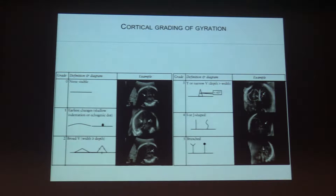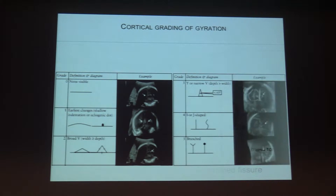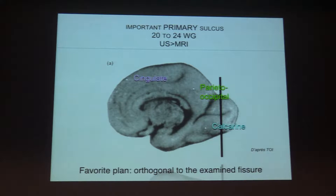The evolution of the sulci results in changes of their shape. The later you are in gestation, the deeper all the different sulci will be, each with a specific shape. When performing ultrasound, it is very important to recognize three main sulci: the cingulate sulcus, the parieto-occipital fissure, and the calcarine fissure.